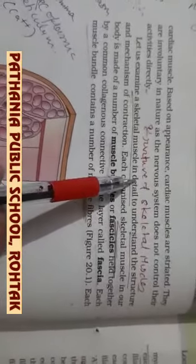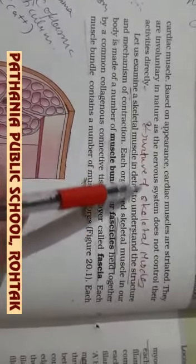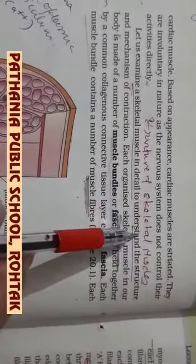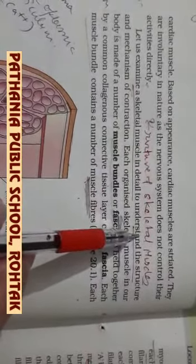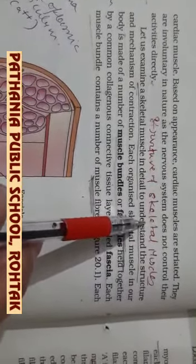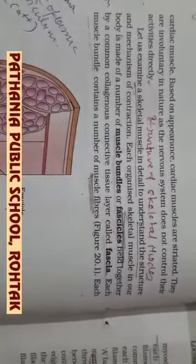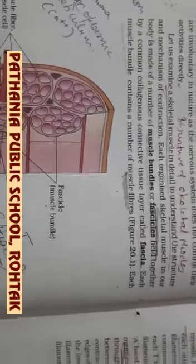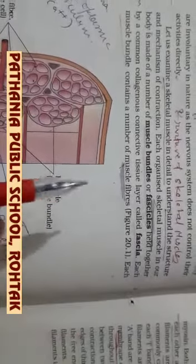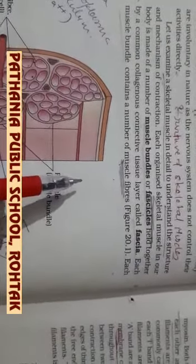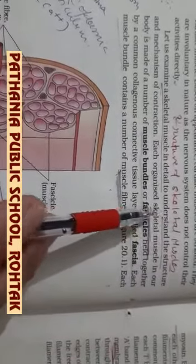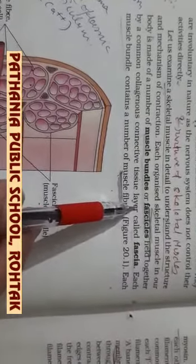Good morning children. Today we are starting with the structure of skeletal muscle. Previously we have seen that there are three types of muscles present in the human body: skeletal muscle, which is also called striated muscle, striped muscle, and voluntary muscle; non-striated muscle or visceral muscle; and cardiac muscle. Out of these, the first one — skeletal muscle — is in the syllabus in detail.